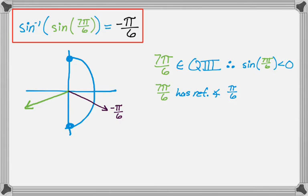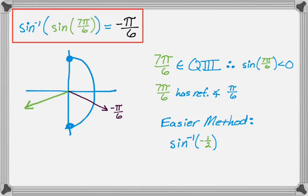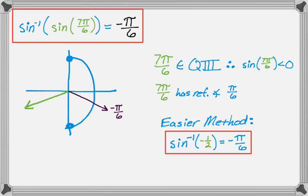There's a more direct way to do this particular problem since I know the sine of 7π over 6. This question comes down to finding the inverse sine of negative 1 half, because the sine of 7π over 6 is negative 1 half, and I have memorized that the inverse sine of negative 1 half is negative π over 6. But as you'll see in the next problem, that method won't always work.